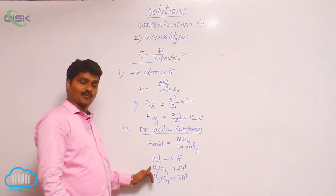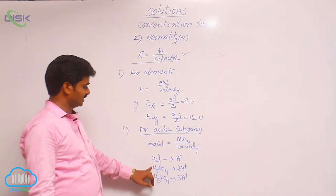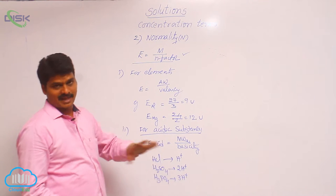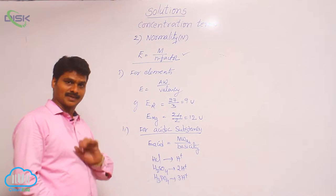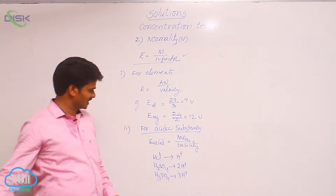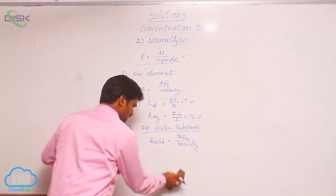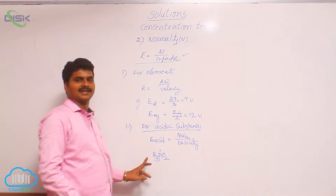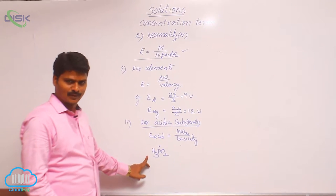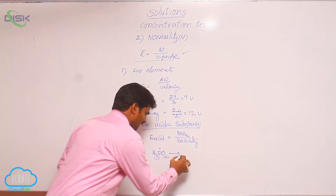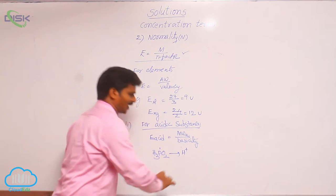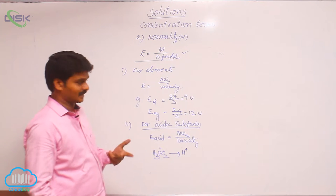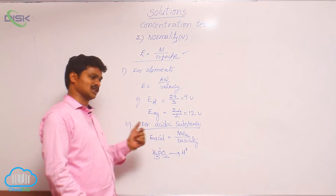So here what we observed is: the number of hydrogens present in the acid is equal to its basicity. But in some acids, the number of hydrogens present is not equal to basicity. For example, H3PO2 — its name is hypophosphorous acid. It can give only 1 H⁺ ion, so its basicity is 1. Why, even though there are 3 hydrogens, is it giving only 1 H⁺ ion?